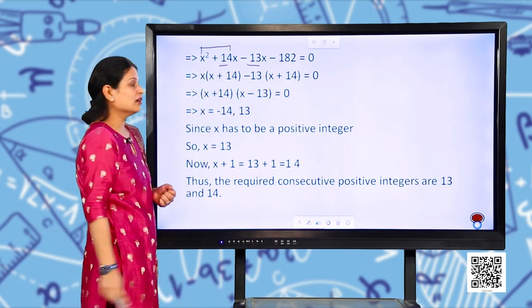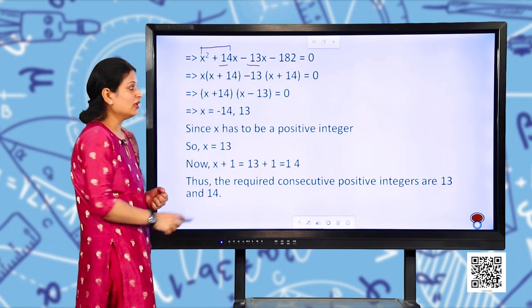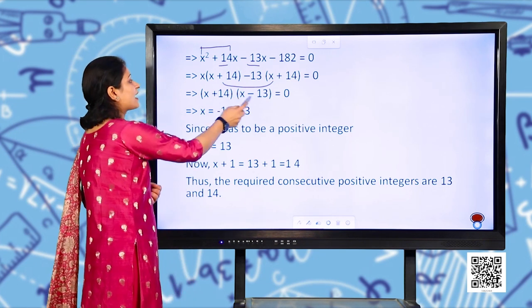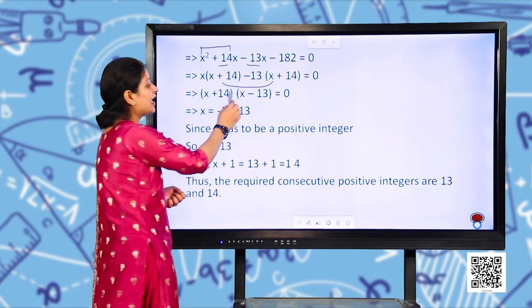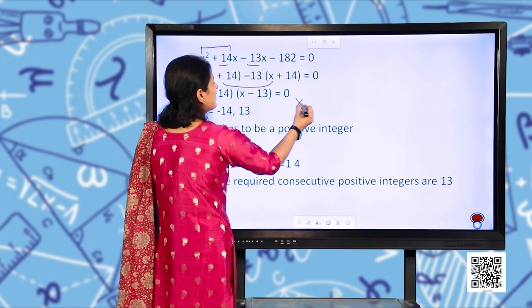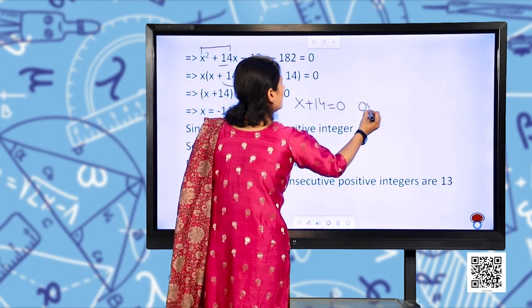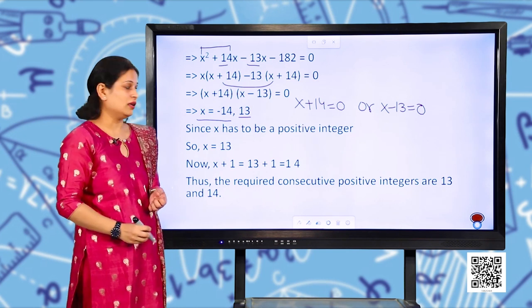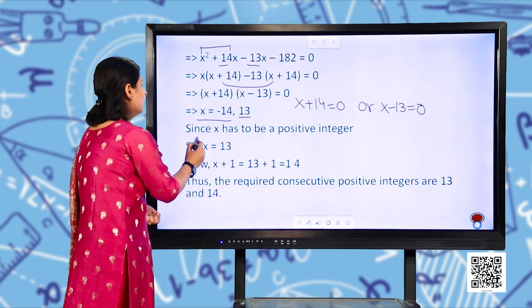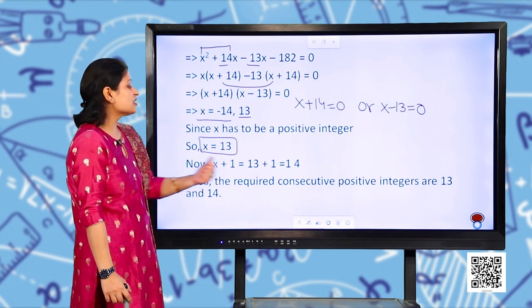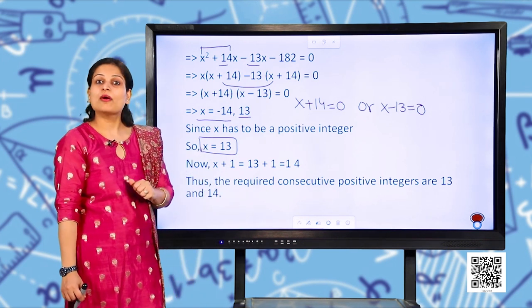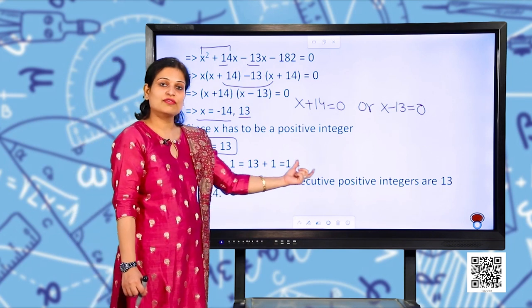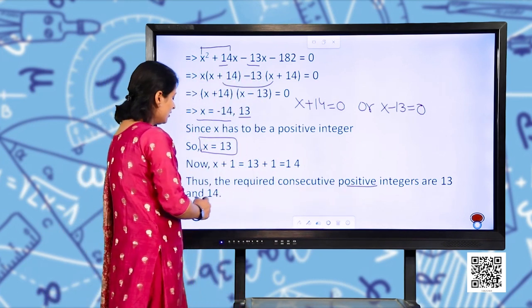Taking x common: x(x + 14) − 13(x + 14) = 0. Both terms have (x + 14) as common, giving factors (x + 14)(x − 13) = 0. So x = −14 or x = 13. Since x must be a positive integer, x = 13. Therefore x + 1 = 13 + 1 = 14. Thus the required consecutive positive integers are 13 and 14.